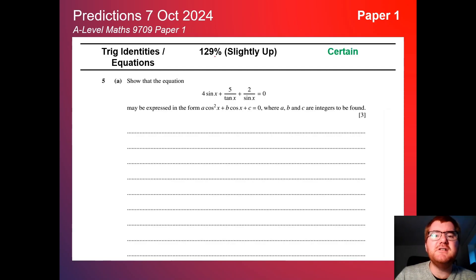On to trig identities and equations, slightly up here at 129%. Making sure you can work with tan equals sine over cos, and also quadratics, which I'll talk about, also sneak into these kind of questions, just like question 5a here.